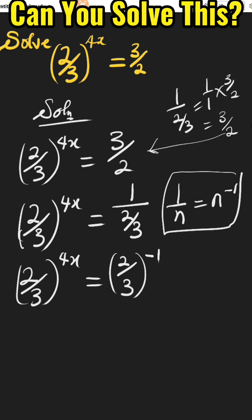At this point, we compare both sides. If we compare both sides, the brackets cancel, leaving us with 4x equal to minus 1.